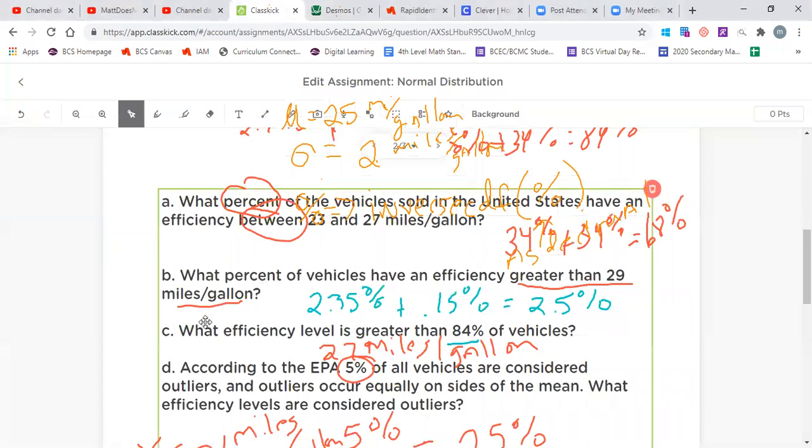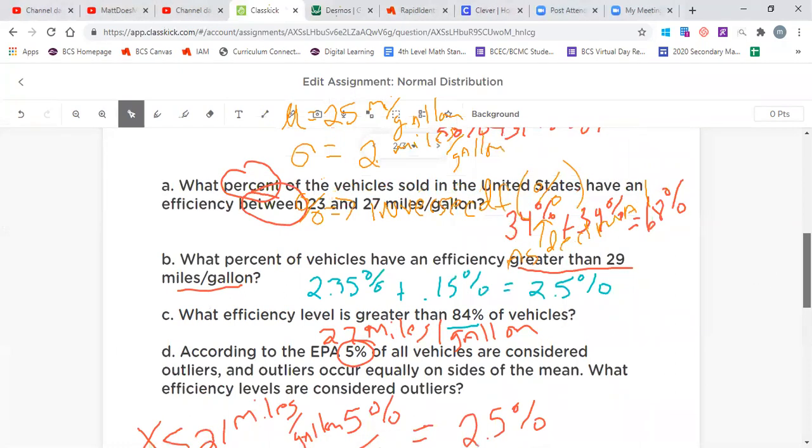If we go back we can verify our answer c. What efficiency level is greater than 84 percent of all vehicles? 27 miles per gallon is 84 percent greater than most of the vehicles out there.